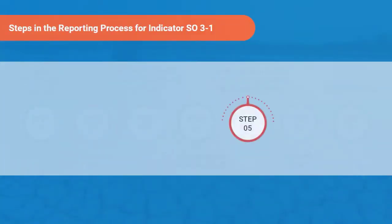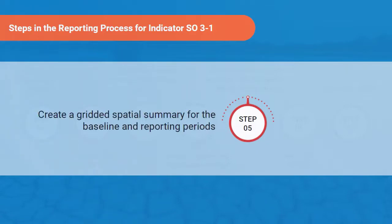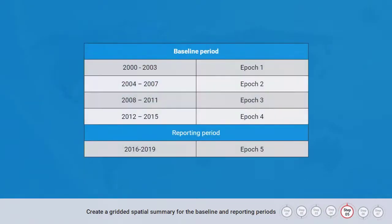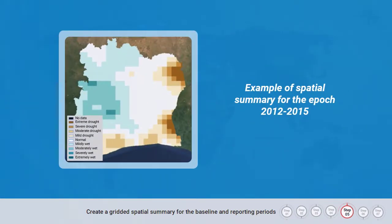The fifth step in the reporting process is creating a gridded spatial summary for the baseline and reporting periods. The spatial summary is useful to map the most extreme conditions that occurred in the baseline and reporting periods. It is calculated in four-year intervals, or epochs, during the baseline and reporting period, with the most extreme drought intensity class in each four-year epoch identified for each grid cell.